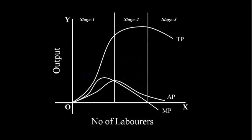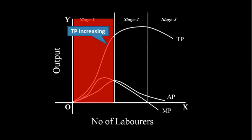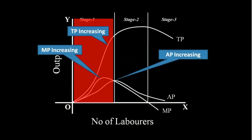The three stages of returns — let us examine what happens in these stages. First stage: increasing returns. Total product is increasing. Average product increases and reaches the maximum. Marginal product increases and reaches the maximum, then it falls and cuts the average product at its maximum point. There ends the first stage.